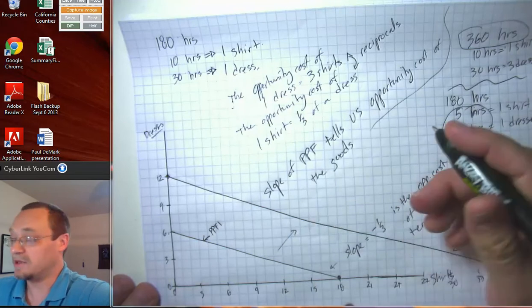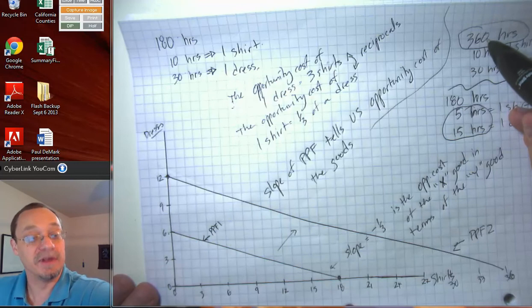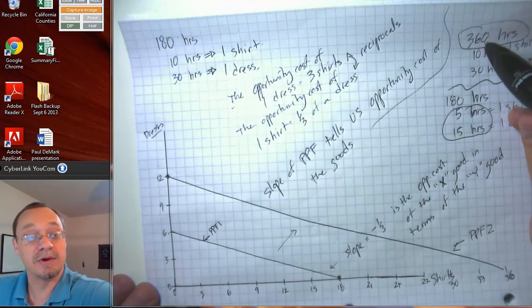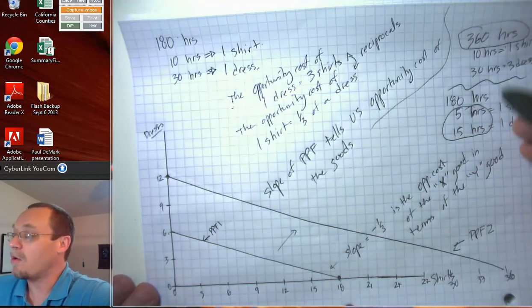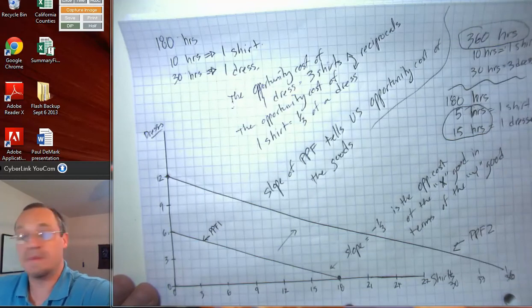Or put differently, either a growth in an economy's productive inputs, land, labor, capital, that sort of thing, or a growth in technology can lead the PPF to shift out.